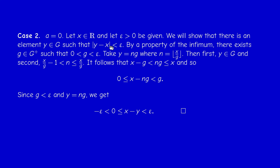So we have proved that any neighborhood of x meets G at a point Y, and we found an element of G to the right of x. Therefore R is contained in the closure G-bar, so G-bar = R, and G is dense in this case. This concludes the proof of the main theorem about subgroups of R+.